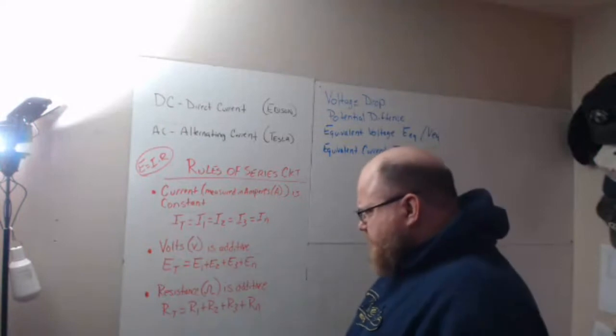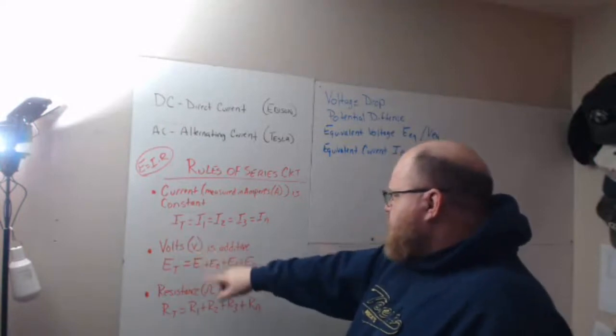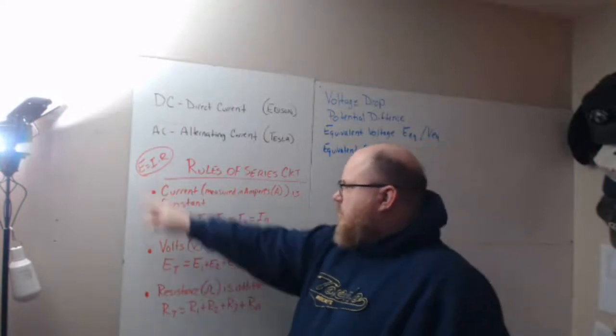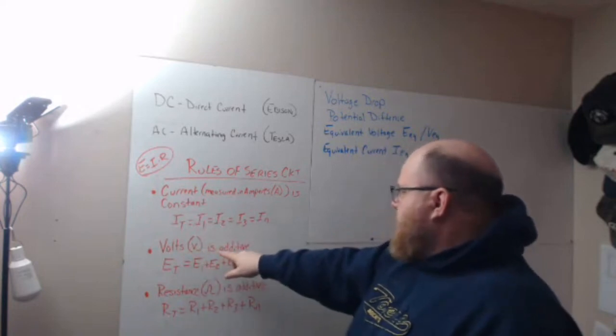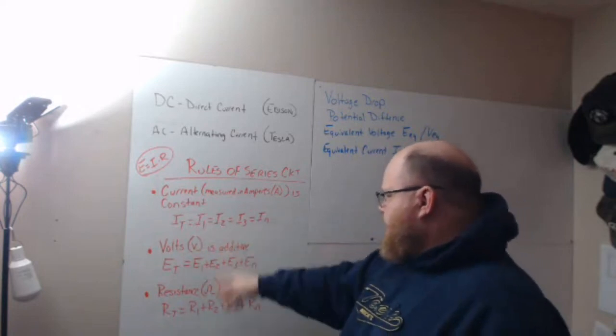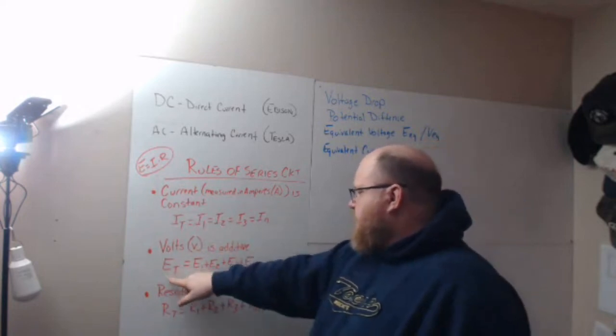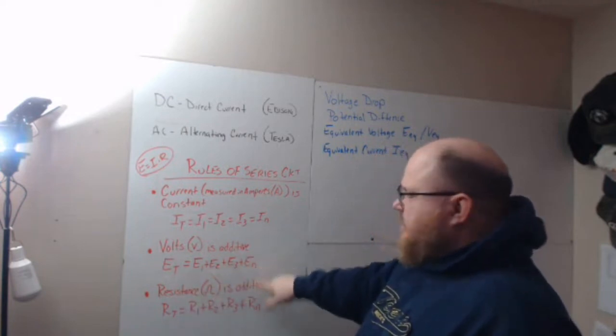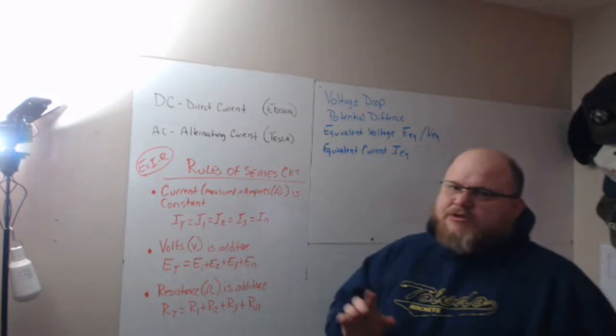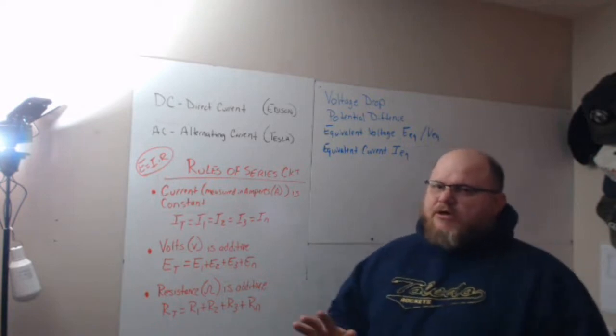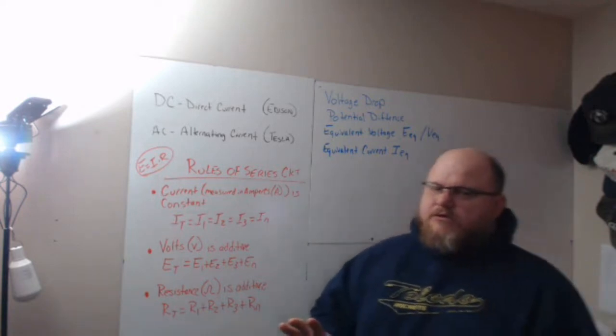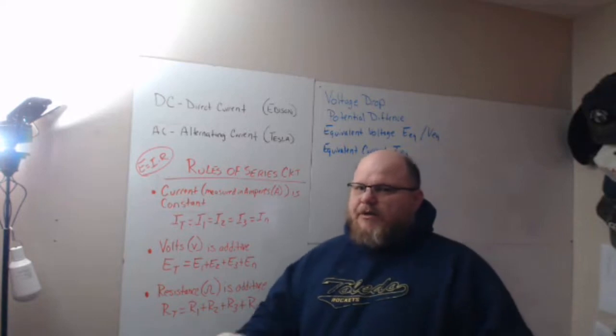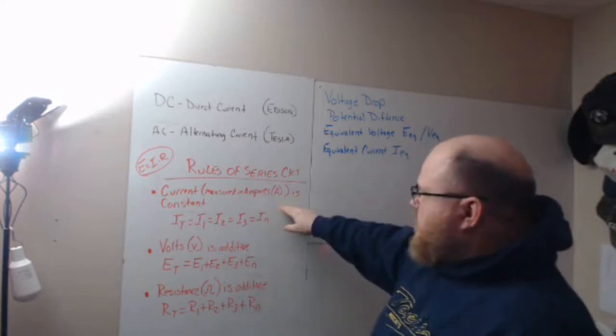Volts. When we talk about volts, which is represented by E in Ohm's law, volts are additive. E total equals E1 plus E2 plus E3 plus E to the N. I know someone's going to start throwing things in about Kirchhoff's law of voltage, Kirchhoff's law of current. We're not there. I'm not worried about it. All we're going to talk about is the rules.